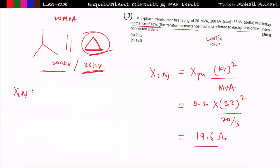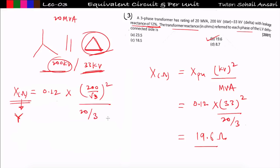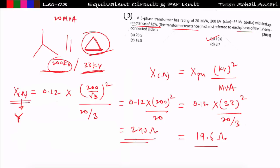If the question asked for transformer reactance referred to the high voltage (star) side: per phase voltage on star side = 200 kV / √3. X in ohm = 0.12 × (200/√3)² / (20/3) = 0.12 × 200² / 20 = 240 Ω. Although the actual reactance values on primary and secondary differ, the per unit value remains the same on both sides. That's all about this lecture.